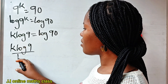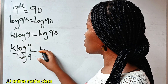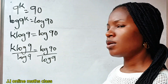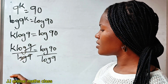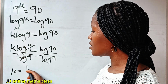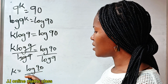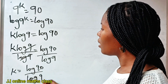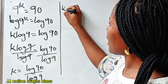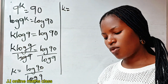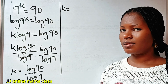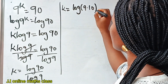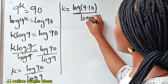Dividing both sides by log 9: log 9 divides itself, so we have K is equal to log 90 divided by log 9. Now, 90 in terms of 9 is 9 times 10. So we have log of 9 multiplied by 10, divided by log 9.